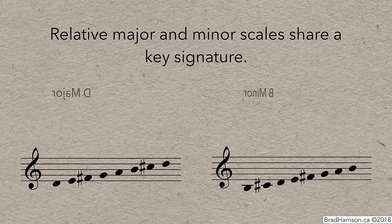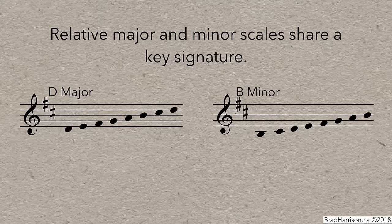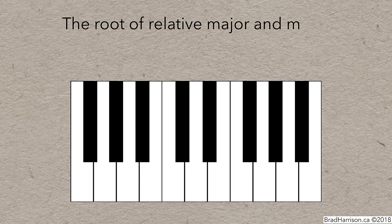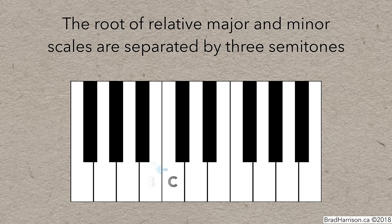For instance, D major and its relative minor, B minor, both have two sharps: F sharp and C sharp. You can write these scales with a key signature instead of writing out individual sharps. The easiest way to determine a scale's relative major or minor is to know that the root of relative major and minor scales are separated by three semitones. To find the relative minor of C major, go down three semitones: C to B, B to B flat, B flat to A. So A minor is the relative minor of C major, and C major is the relative major of A minor.